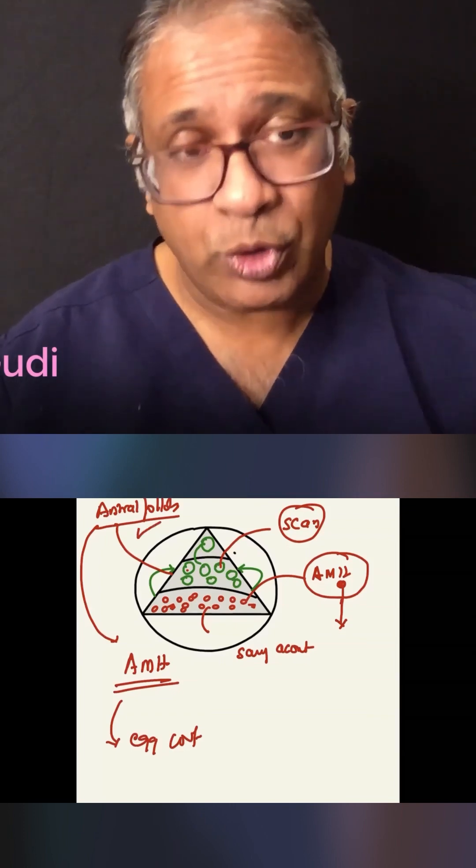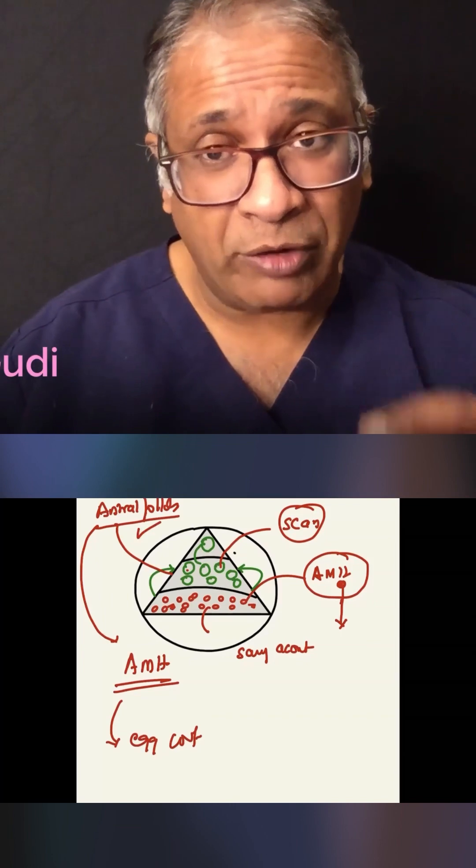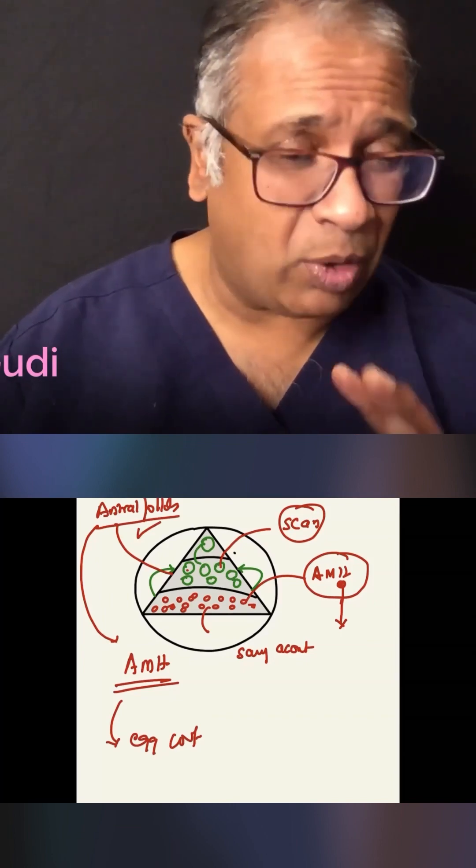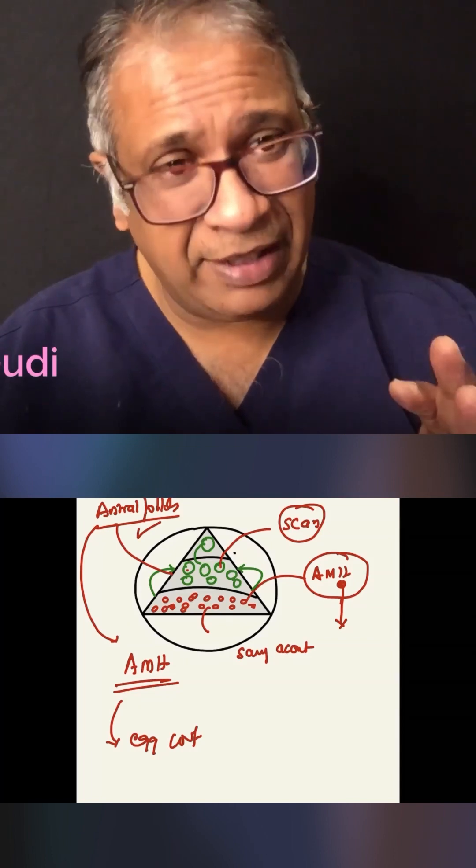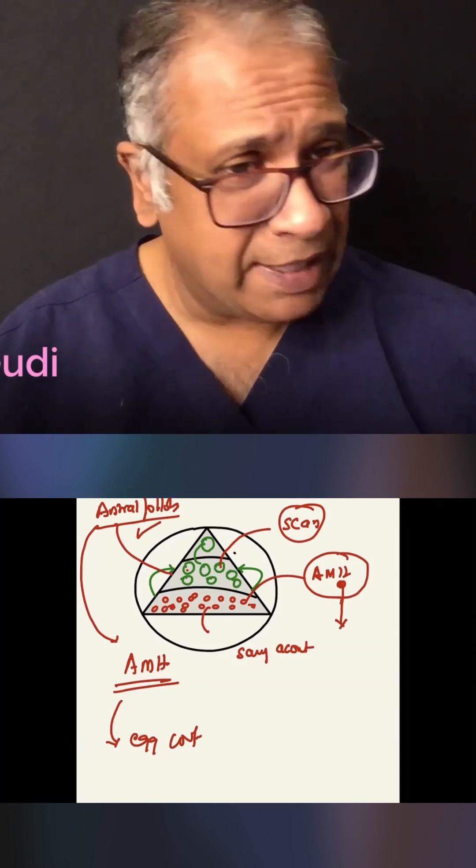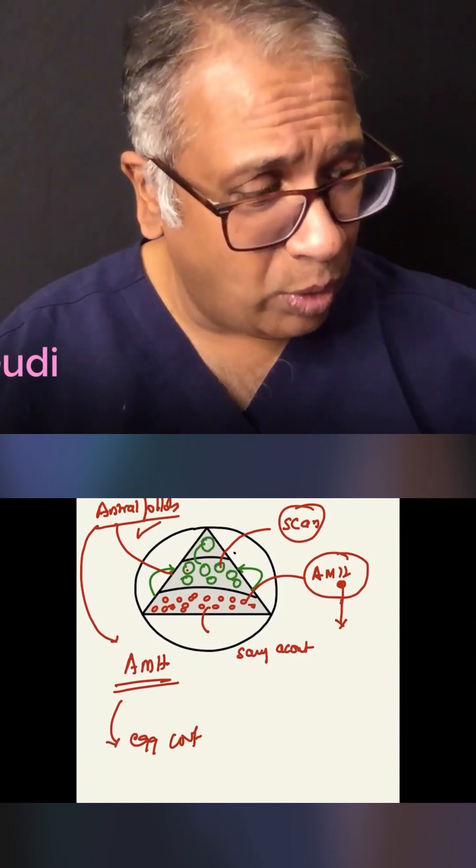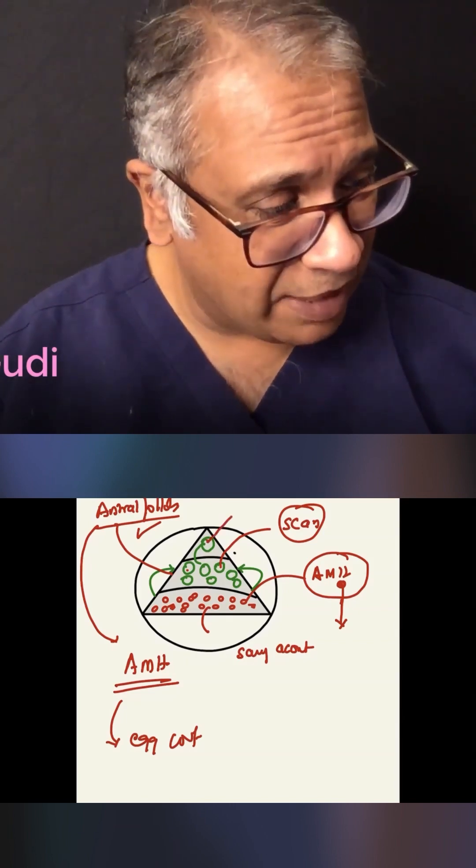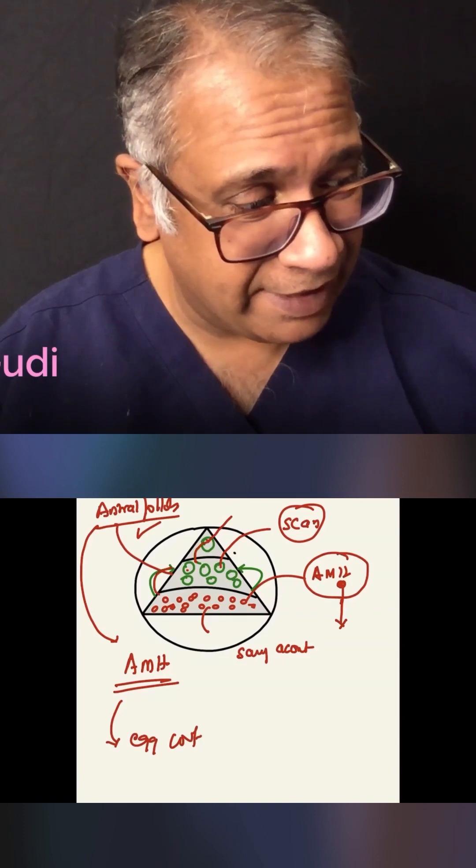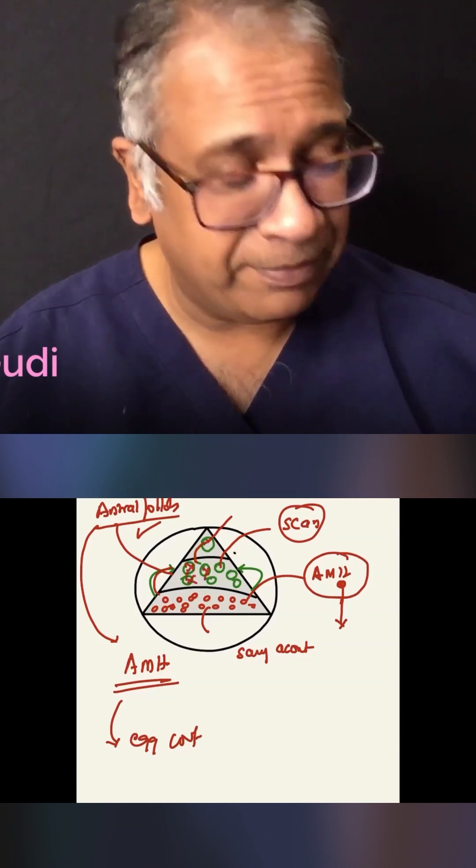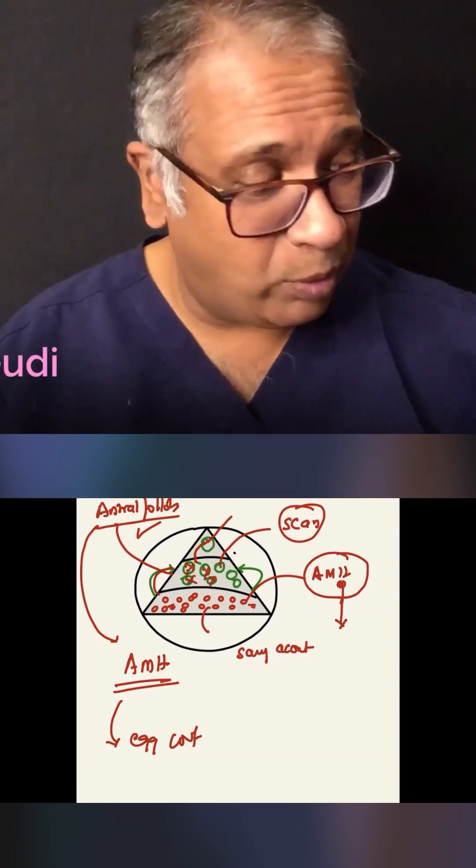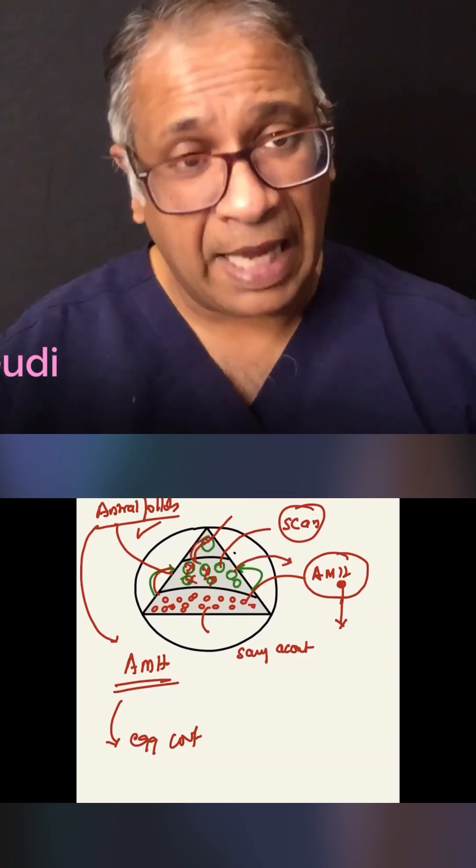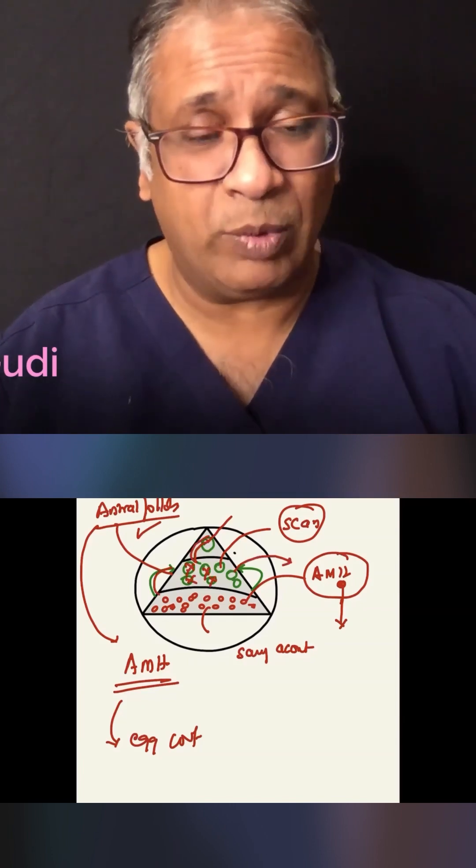Those are the women who will continue to have a good fertility and do well in IVF. So this is called, I call it jokingly, the goody triangle and what it tells you is how eggs grow. But also remember as eggs are growing only one egg reaches here and the others die. And that's the way the ovary goes on producing one egg and the rest will die. And that is how the egg reserve works.